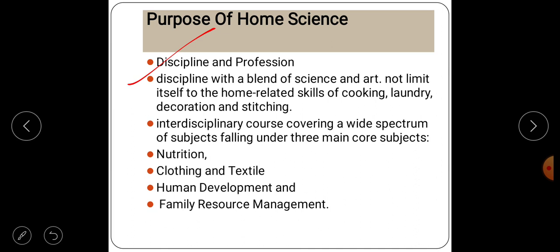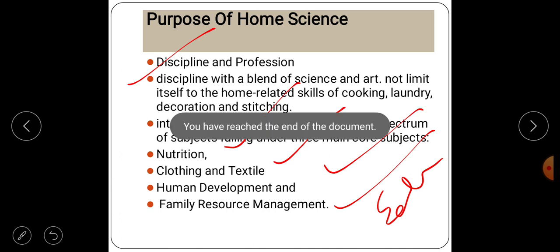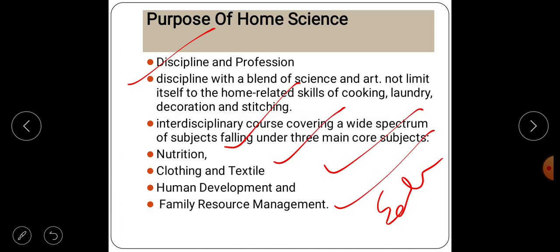Falling under the three main core subjects: nutrition, clothing and textile, human development, and family resource management. There is also extension education. This is a very easy topic, you can say, but a very tricky topic. You have to clear it very well. If any kind of questions are asked from this section, you can easily tackle it with your presence of mind. Thank you so much for watching our channel, and yes, there are five branches. Thank you so much, keep watching, keep learning.